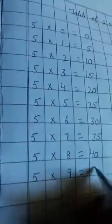5×7's are 35. 5×8's are 40. 5×9's are 45.